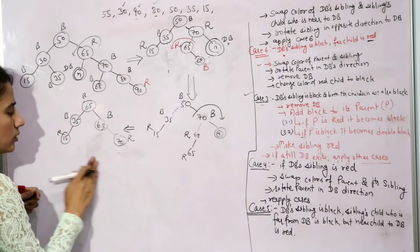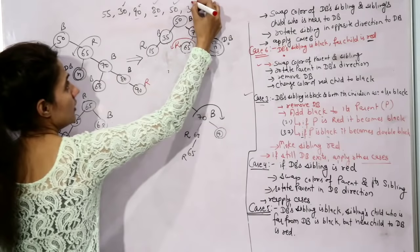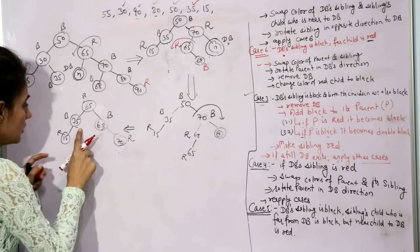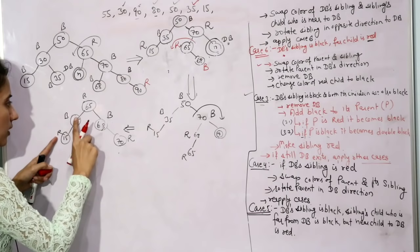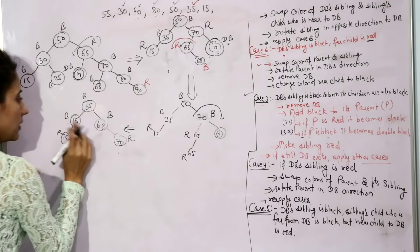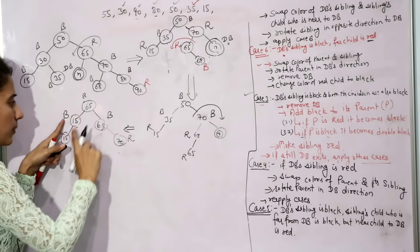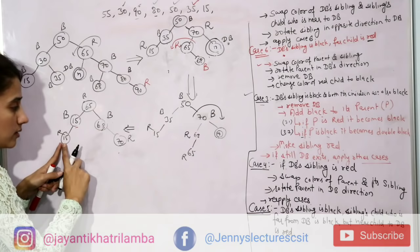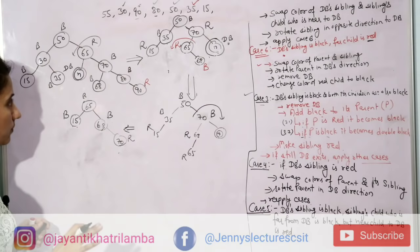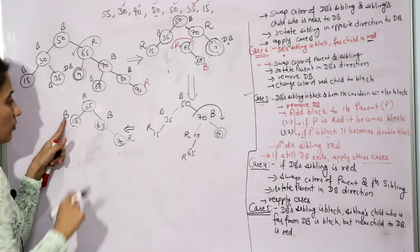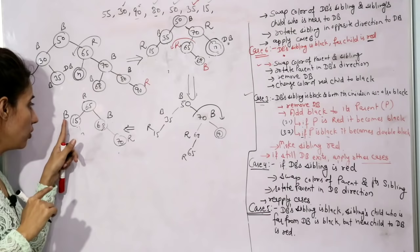Delete 35: it has one red child (15). Replace 35 with value 15 keeping the black color, then delete the original red leaf 15 — simply delete it. Next, delete 15: it is black with two nil children (also black), so it will become double black after replacement.